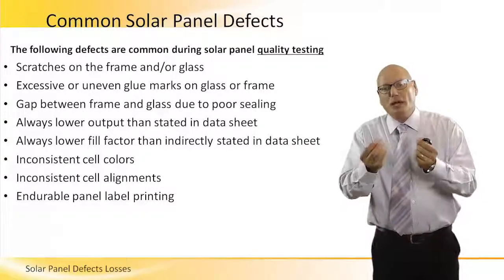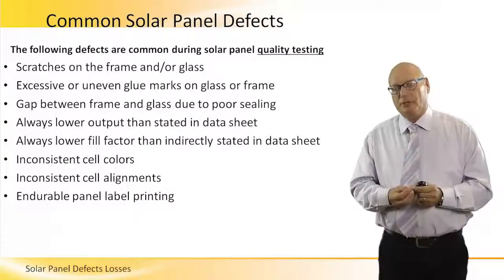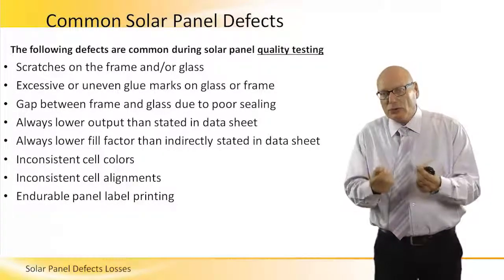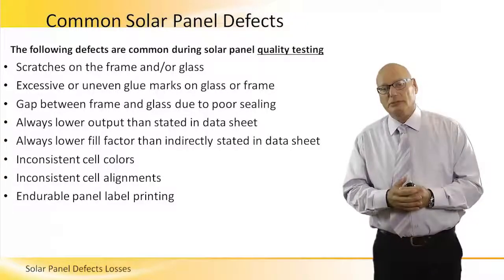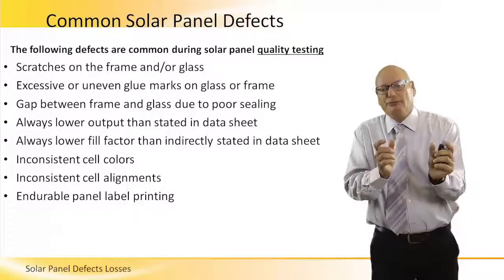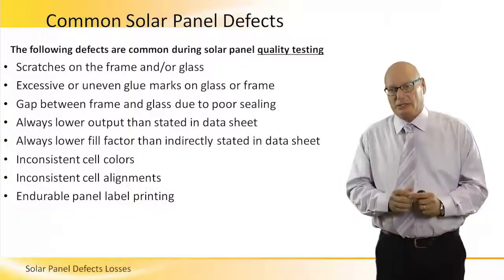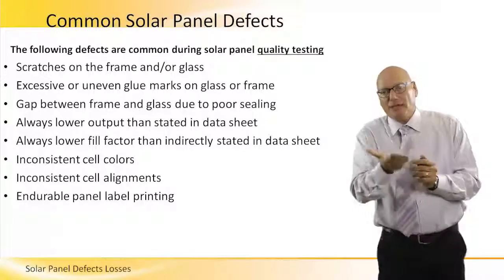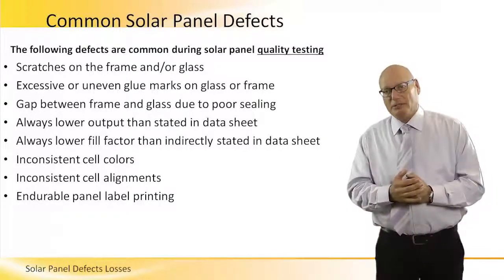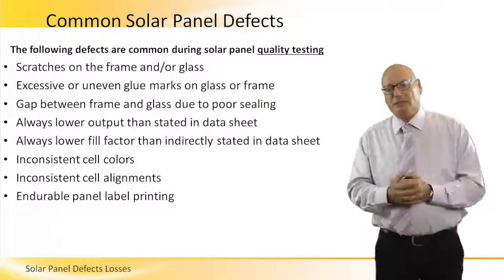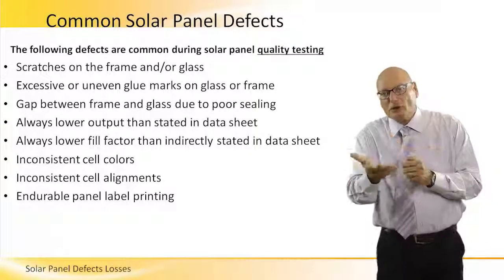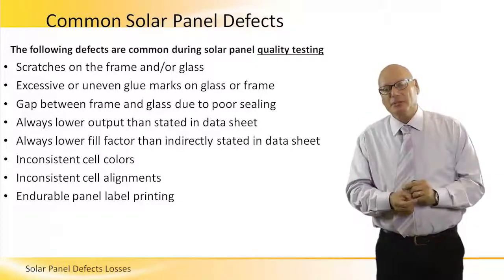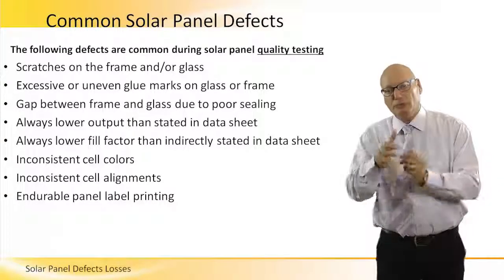Excessive or uneven glue marks on the glass or frame — glue is another filter. If there is excess glue, light will not go through. A gap between the frame and the glass due to poor sealing means vapor, dirt, and dust will enter that space, acting as another filter — light will not go through.